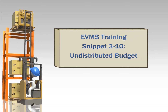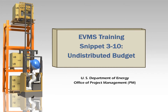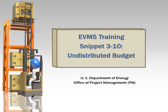This training snippet, sponsored by the Department of Energy's Office of Project Management, discusses the Earned Value Management System budgeting concept of Undistributed Budget, or UB. The purpose is to provide a common understanding within DOE and among DOE contractors, and to provide consistency.